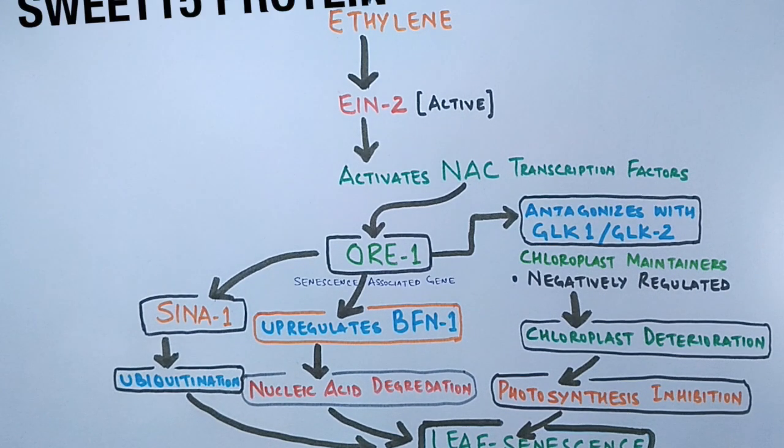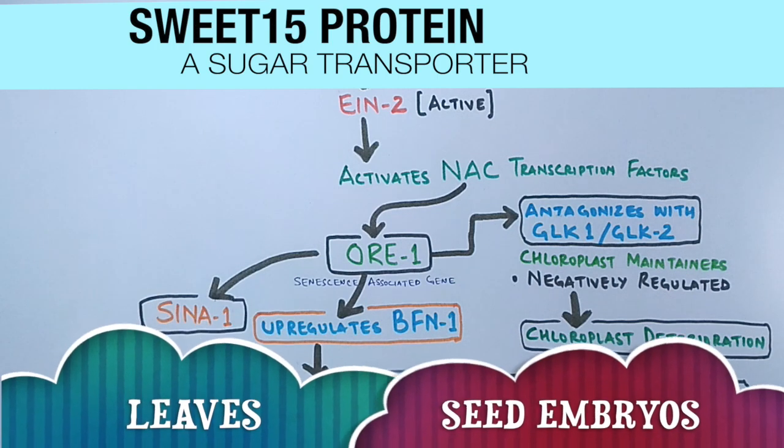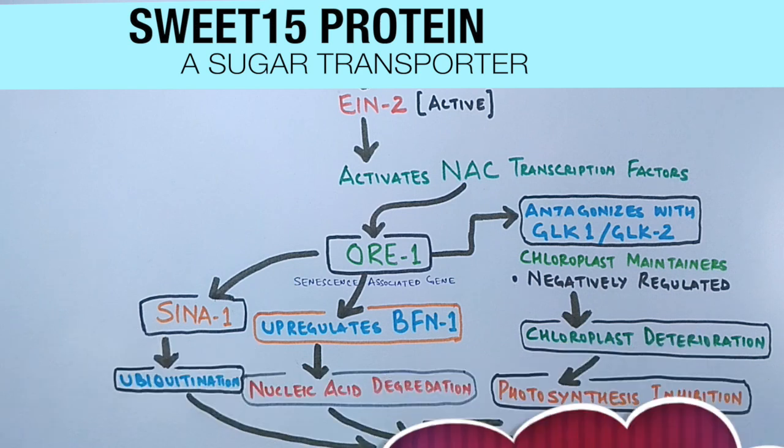There is another protein, namely SWEET15 protein, whose transcription is upregulated by ORE1 gene. This SWEET15 protein is a bi-directional sugar transporter that relocates the sugar from leaves to seed embryos, thereby promoting leaf senescence also.